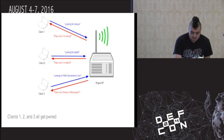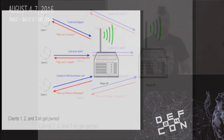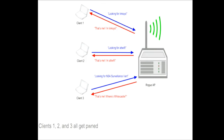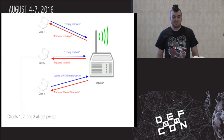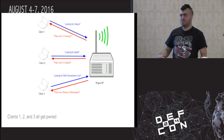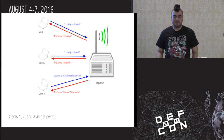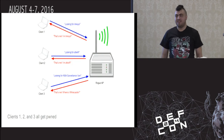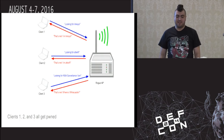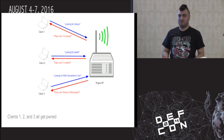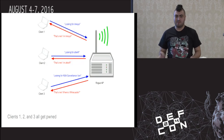What this means is that if we set up a rogue access point and just have it gratuitously respond to every single probe request it receives — for example, some client sends out a probe request for 'Linksys,' and I see that and respond saying 'yeah, I'm Linksys, go ahead and connect' — that device will automatically connect. Then if from the same access point we receive another probe request for a different SSID, say 'AT&T Wi-Fi,' the rogue AP sends a response for that too, and a second client connects as well. So you have a single access point responding to every single probe request it receives, regardless of whether it's actually for itself or something else.